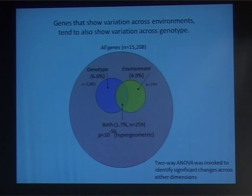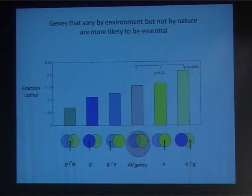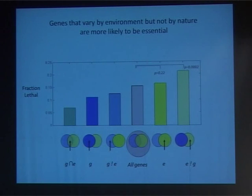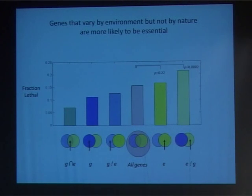A gene that varies across the environment also tends to vary across the genotype. Functionally, we were surprised to find that genes varying just across the genotype tend to be less lethal — overall 15% of C. elegans genes are lethal upon perturbation, but those genes most noisy across both genotype and environment tend to be the least essential. Expression that changes the most is apparently least under selection and most likely to drift.